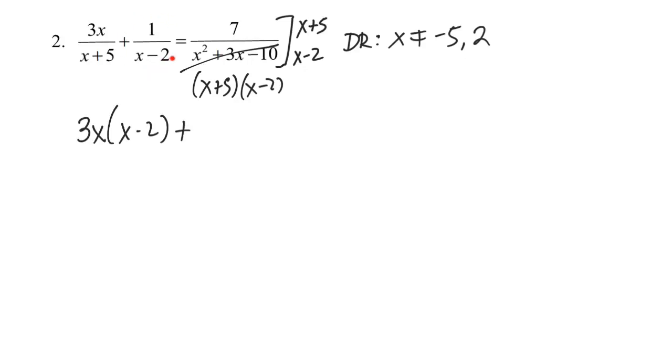Now, going to the next fraction, this 1 over x minus 2, when I multiply by x minus 2, that's going to cancel. I'm going to be left with 1 multiplied by x plus 5. That's going to equal the right-hand side, which on the right-hand side, both of my denominators are going to cancel since they're both down here, and I'm multiplying by both of them. So the right-hand side is just going to reduce down to 7.